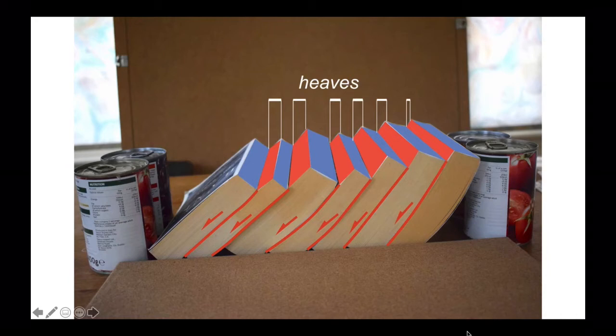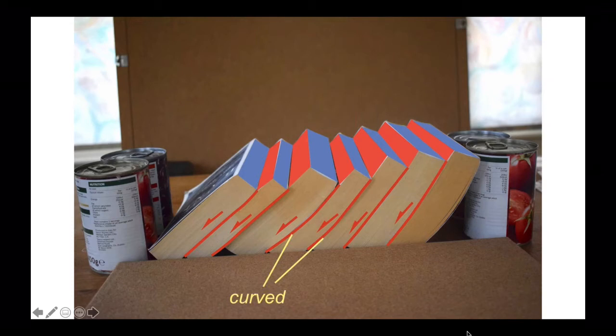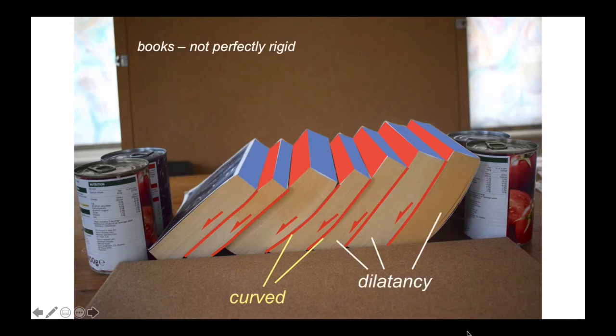We could add together all the heaves that we see across here, the horizontal displacements of the faults. Notice that the fault surfaces here are curved, reflecting a slight distortion in the books. We haven't managed to keep them perfectly rigid. The pages have popped apart a bit and as a consequence the faults have become curved.